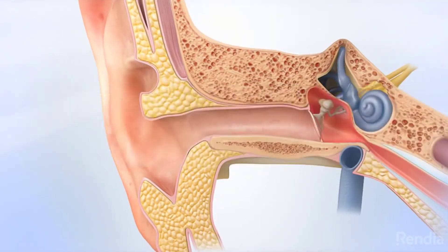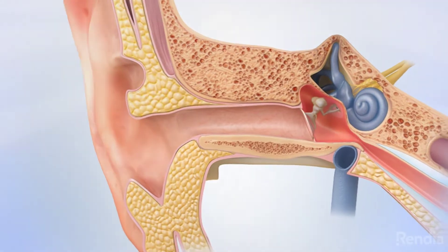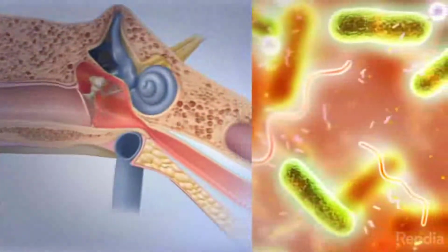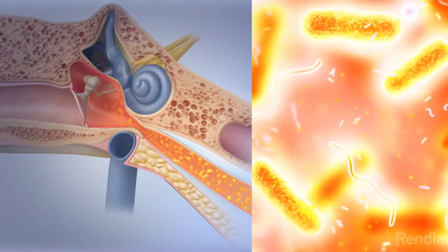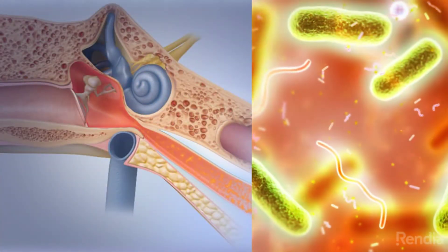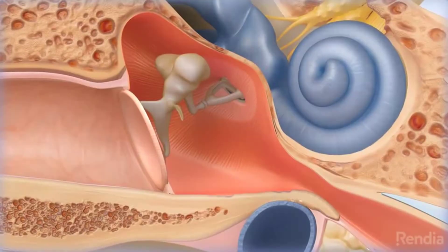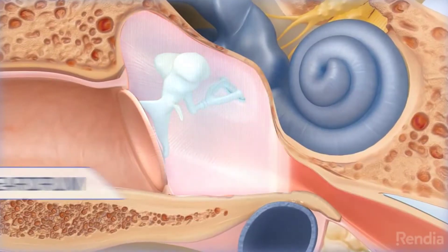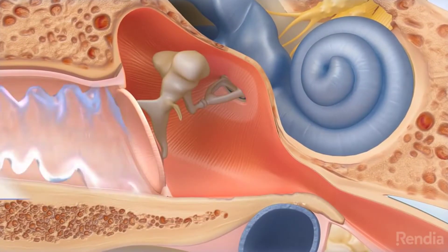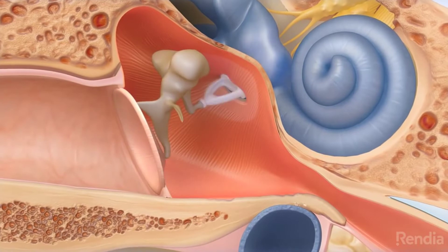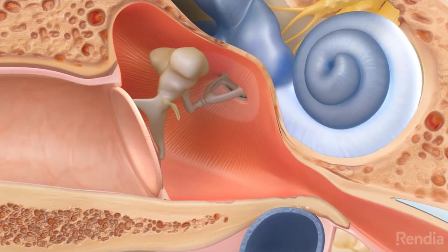Otitis media is an infection of the middle ear and is typically caused by a bacterial or viral infection. The middle ear is located behind the eardrum and contains tiny vibrating bones that help transmit sound to the brain.